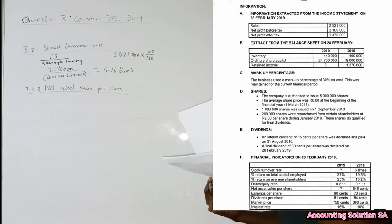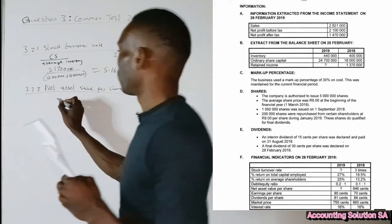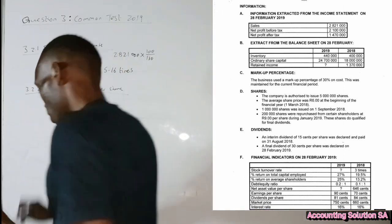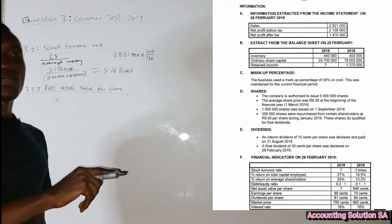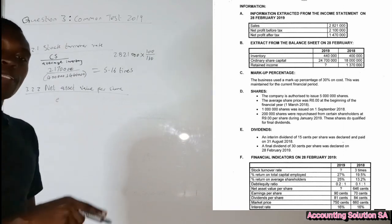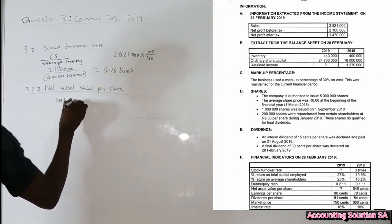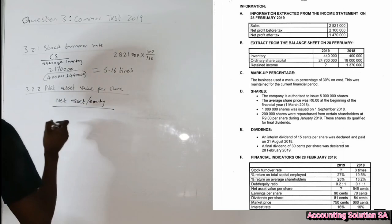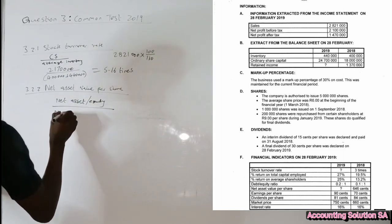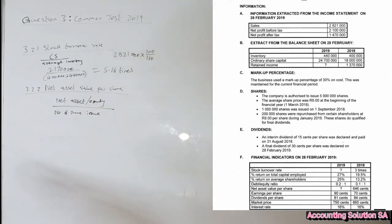Number 3.2.2 — Net Asset Value per Share. The formula is: Equity divided by Number of Shares. Equity is the same as net assets — that is, total assets minus total liabilities equals equity, which is the same as net assets. So net assets, or equity, divided by the number of shares issued. Our equity for 2019 is as follows.